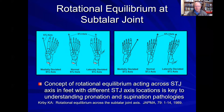Looking more specifically at the subtalar joint axis — an area of interest for over 30 years — when this axis goes medial or lateral, we can see from the dorsal view a normal axis location passing through the posterior lateral calcaneus and overlying the first metatarsal anteriorly, along with more medial and more lateral axis locations. On the plantar view as well, we have medial, normal, and lateral axis positions. Changes in subtalar joint axis location lead to variations in the moments experienced by the subtalar joint during weight-bearing activities from ground reaction force or muscle activity.